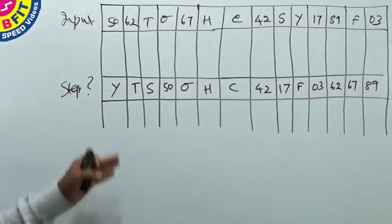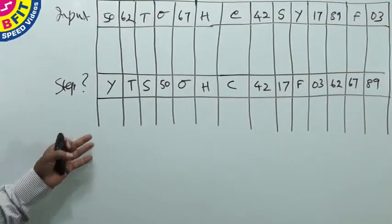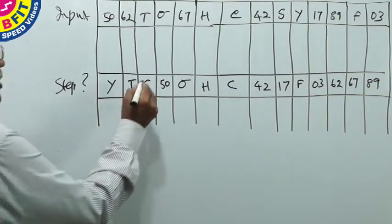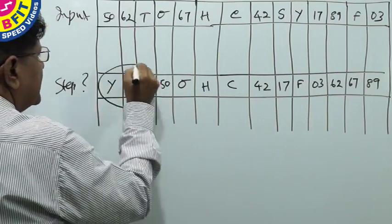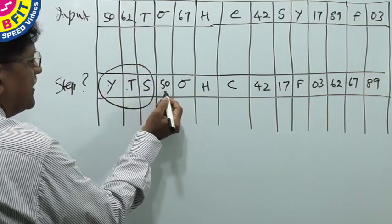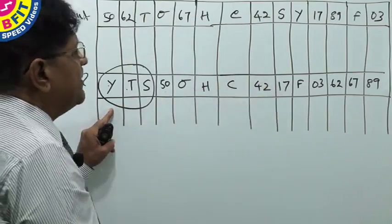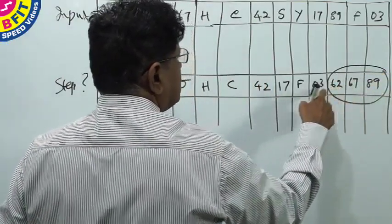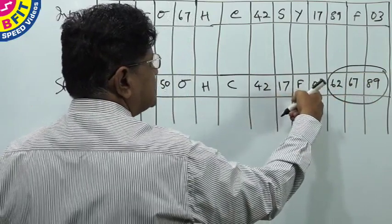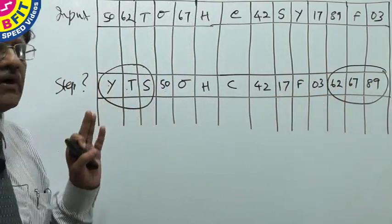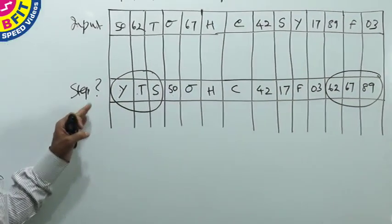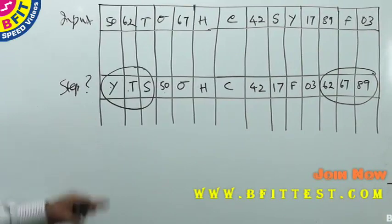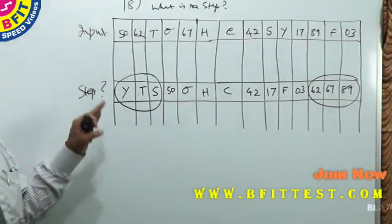We shall not do the working in the traditional manner — we have to use intelligence. The alphabets are being arranged in descending order. Look at the first three alphabets: Y, T, S — arranged in descending order. Next comes 50, which is a number. Similarly, the numbers must be arranged in descending order. Looking at the numbers: 62, 89, 67 are arranged, but 42 has not been arranged yet. Therefore, three steps are over. This is step three — step four is yet to happen. Therefore, the answer is step three.